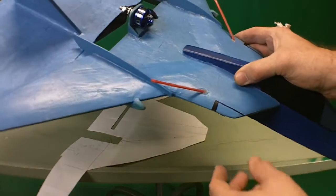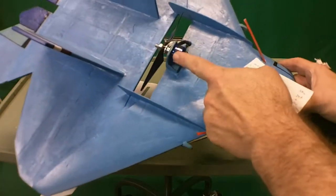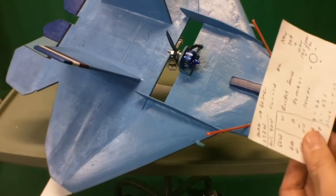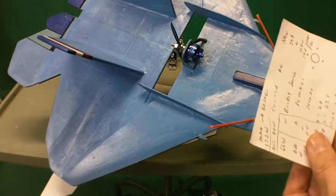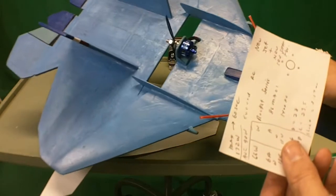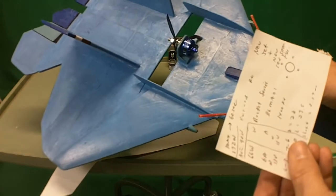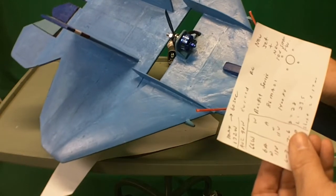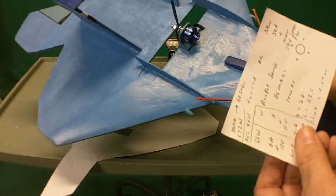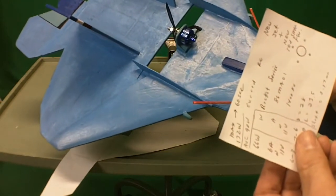The motor that I'm using is Exceed RC rocket series. It's an 86MA01. It's 1400 kV and I'm pulling about 90 watts out of it so it's not overpowered and I'm getting about eight minute flights at full power.